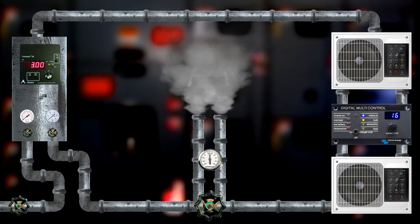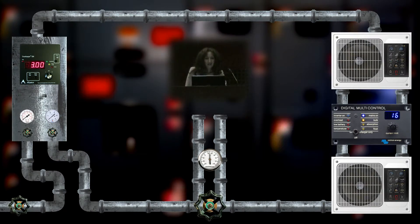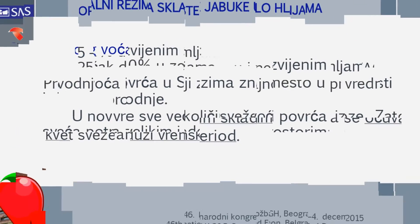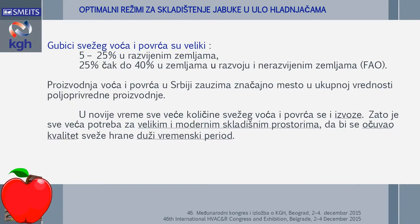The problem is the optimal rate of cabbage and coldness. The losses are very large, in the size of 5% to 25% in European countries, including 25% to 40% in some European countries. These are data from European countries.